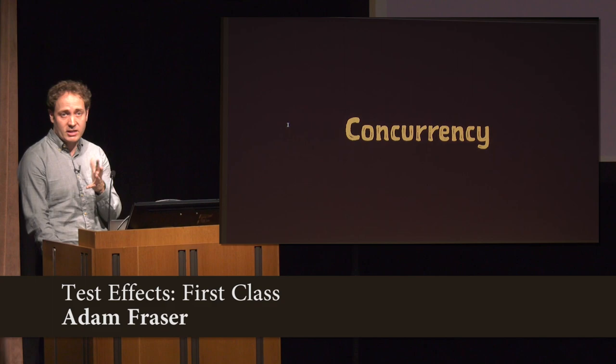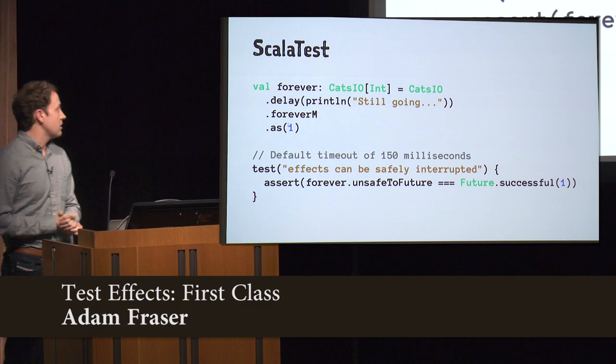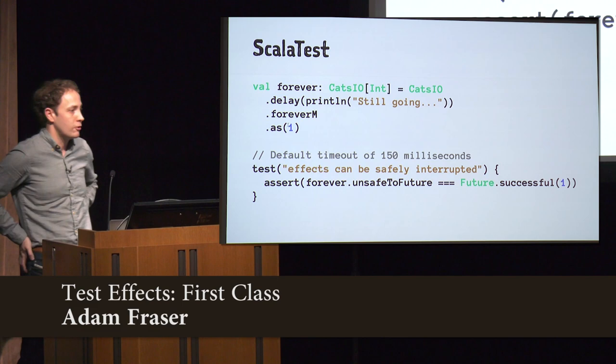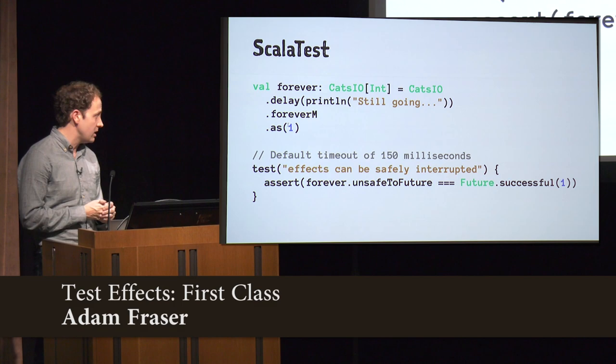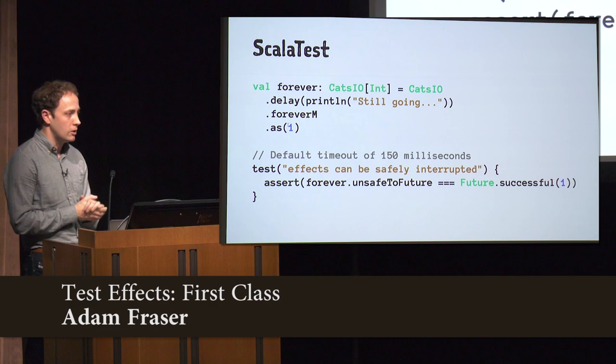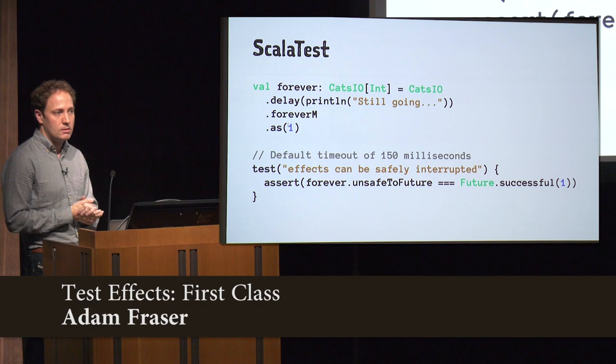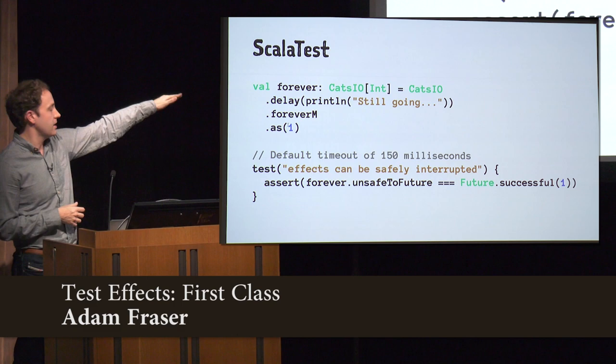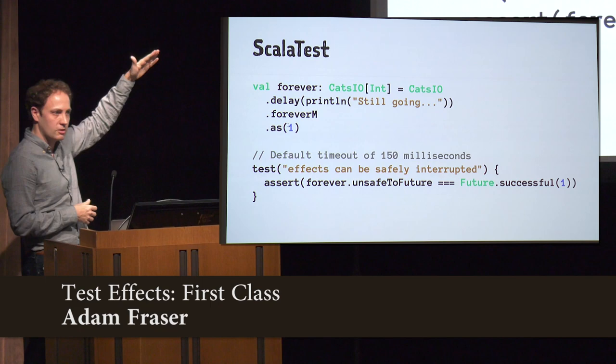The first thing we asked about was concurrency and async. Let's look at this code — an effect that is going to print 'still going' forever. We're using ScalaTest, and there's a default timeout of 150 milliseconds, so this test is just going to timeout and fail, right? Well, the test is going to fail, but this testing framework has no way of actually interrupting that effect. So you're just going to see print line forever and ever.